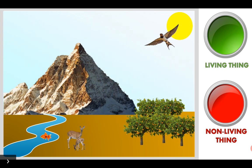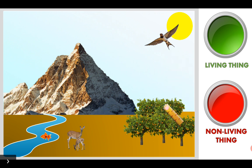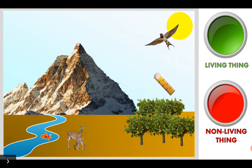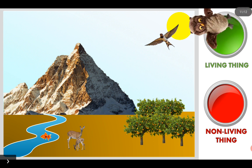This goldfish. Wow! Can you see? Now we have got a mountain, a swallow bird, five orange trees, a river, two deer, the sun, and the fish. Fantastic! Let's continue.